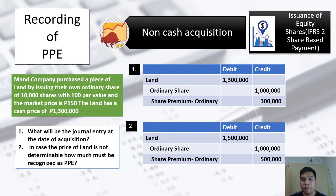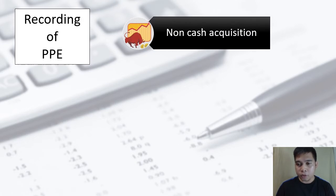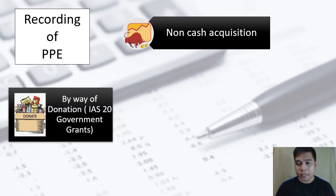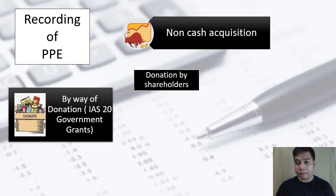Property, plant and equipment can also be acquired through donation — meaning the donor gives PPE to the entity. We first need to determine who is giving the PPE. If the one giving the PPE is the shareholder itself, we do not recognize any income or liability account. Instead, it goes directly to our capital account using the account title Donated Capital. For example, if land is donated: debit Land and credit Donated Capital.